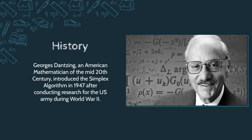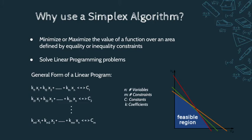We use the simplex algorithm to minimize or maximize the value of a function over an area defined by equalities or inequalities. We also use it to obtain the best possible solution to a linear program. The general form of a linear program has n variables and m constraints — a list of equalities or inequalities of the form k1·x1 plus k2·x2, etc., larger, smaller, or equal to a constant C.